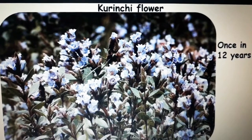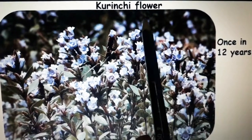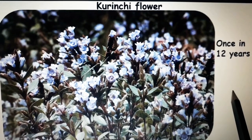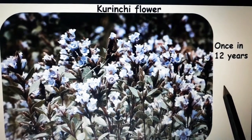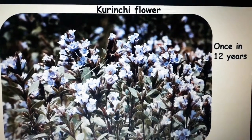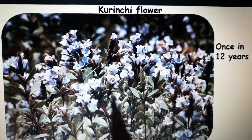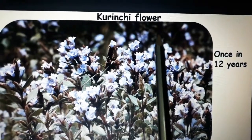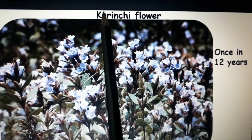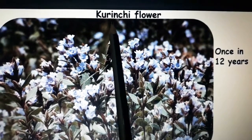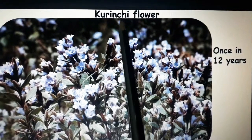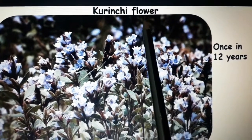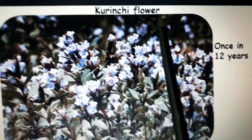One plant is the Kurinji flower. It blooms only once in 12 years. It is a very beautiful flower. Spell it with me students: K-U-R-I-N-C-H-I, Kurinji, F-L-O-W-E-R, flower. Kurinji flower.